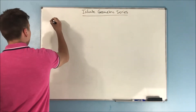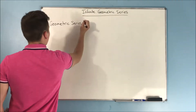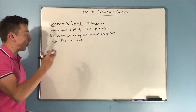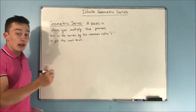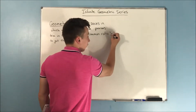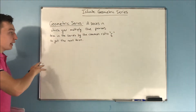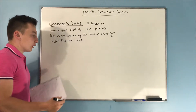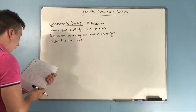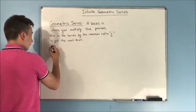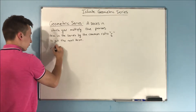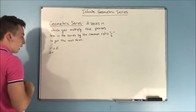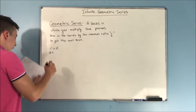A geometric series is a series in which you multiply the previous term in the series by the common ratio, which we denote r, and that gives us the next term in the series. So for example, if we had a common ratio of r = 2 and a starting term a = 3: